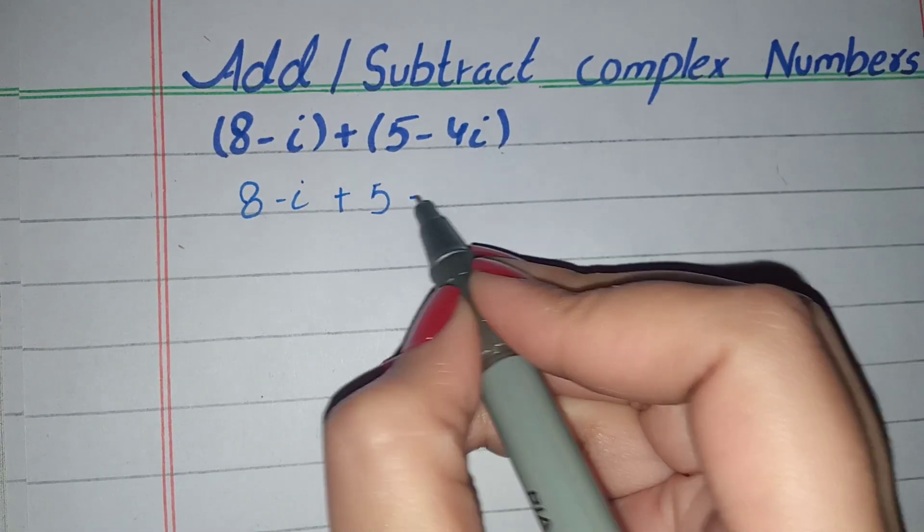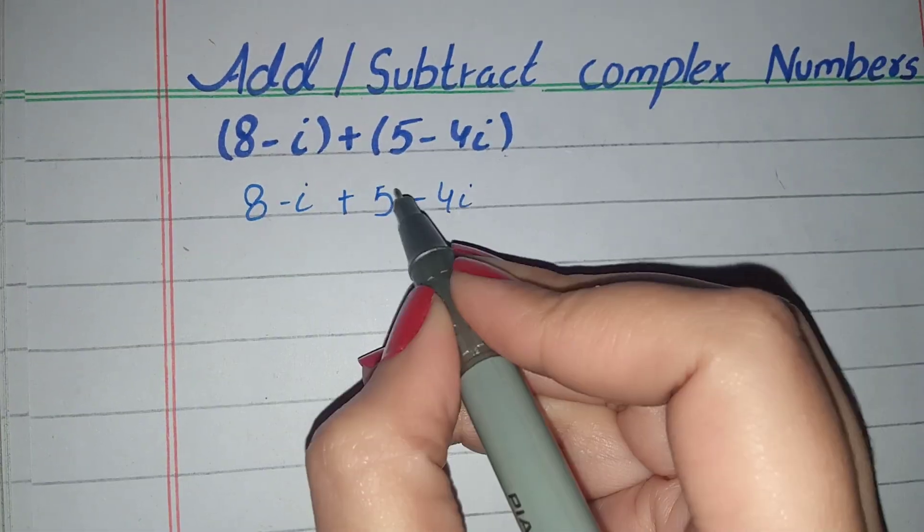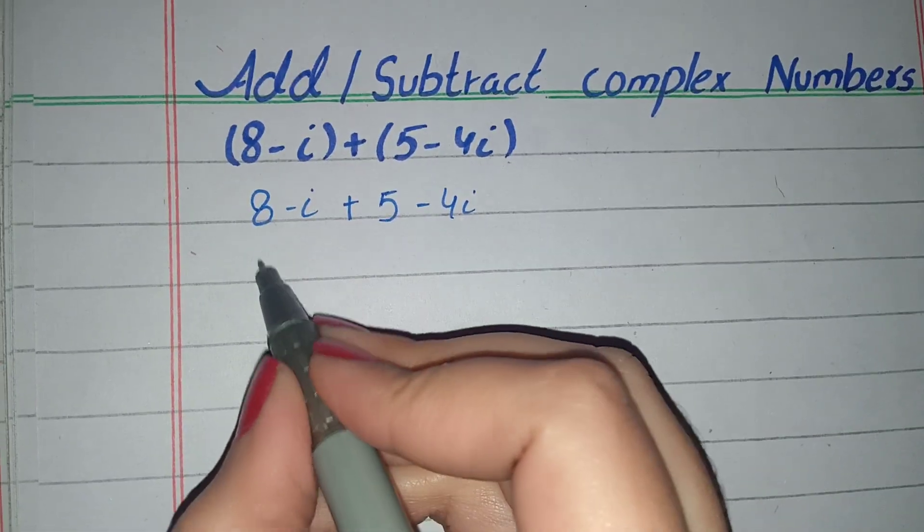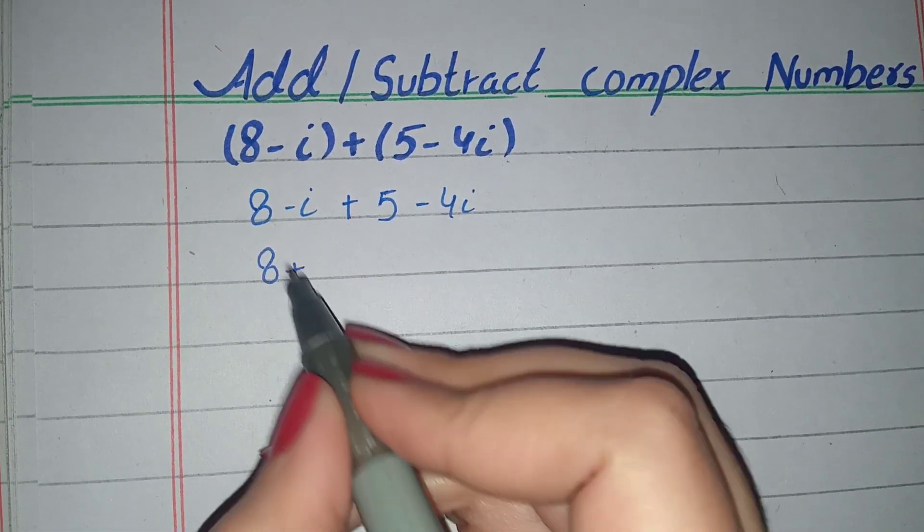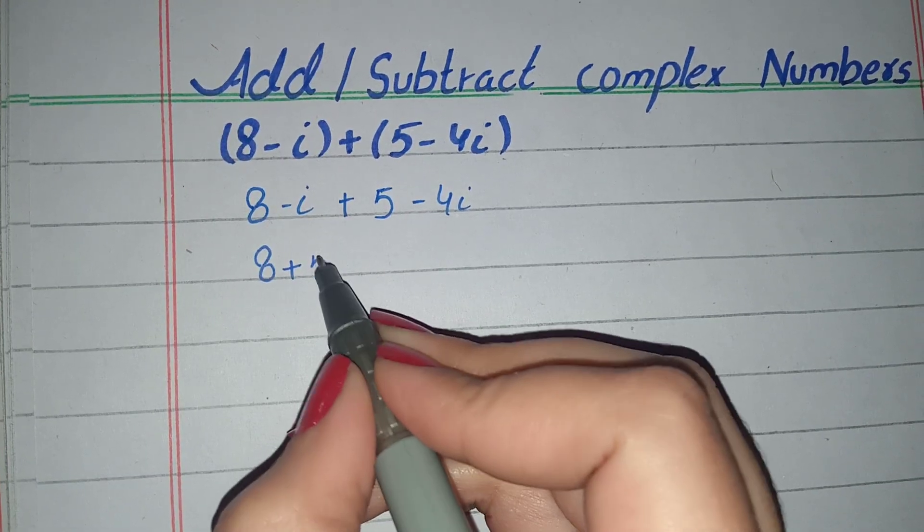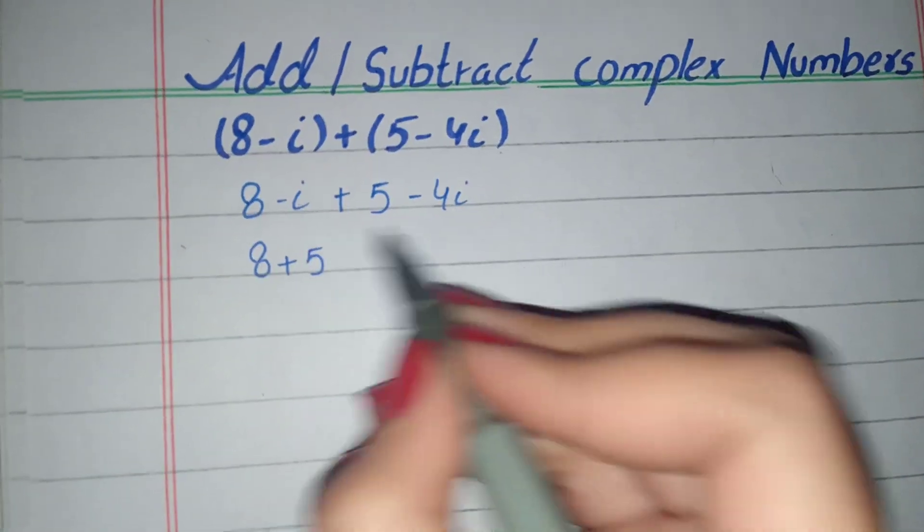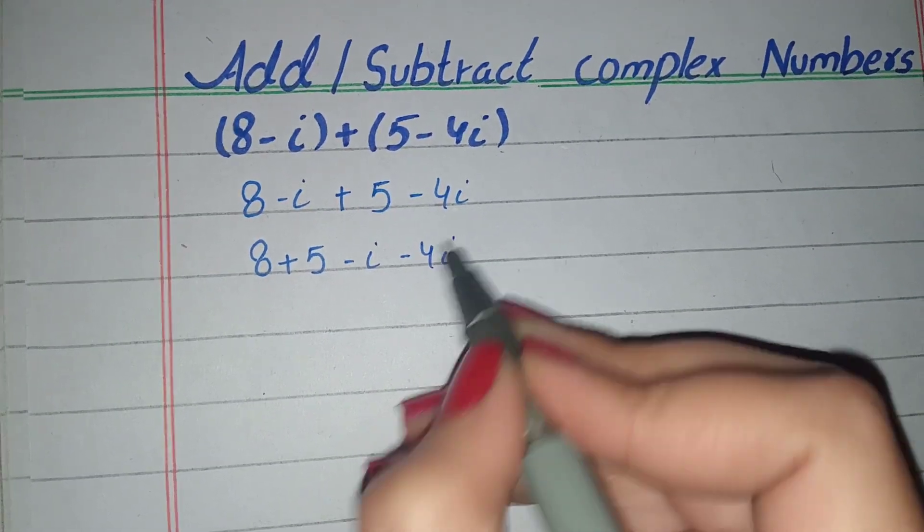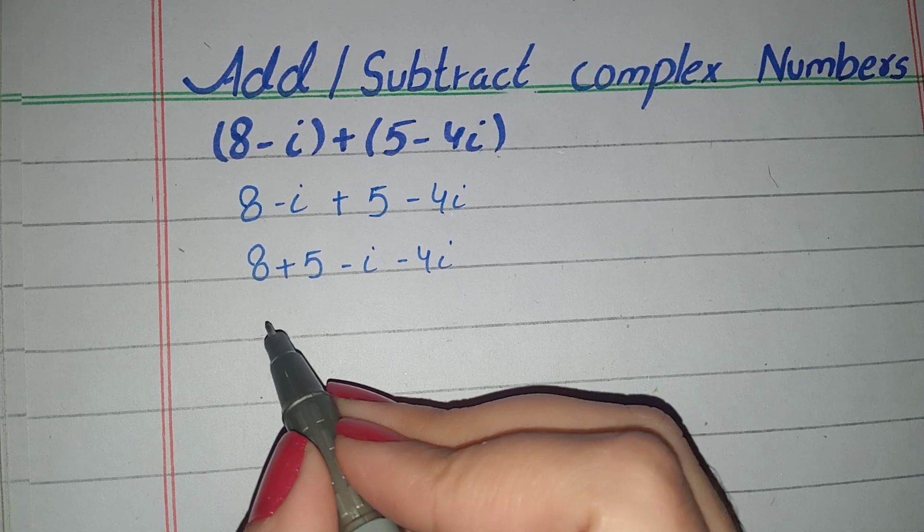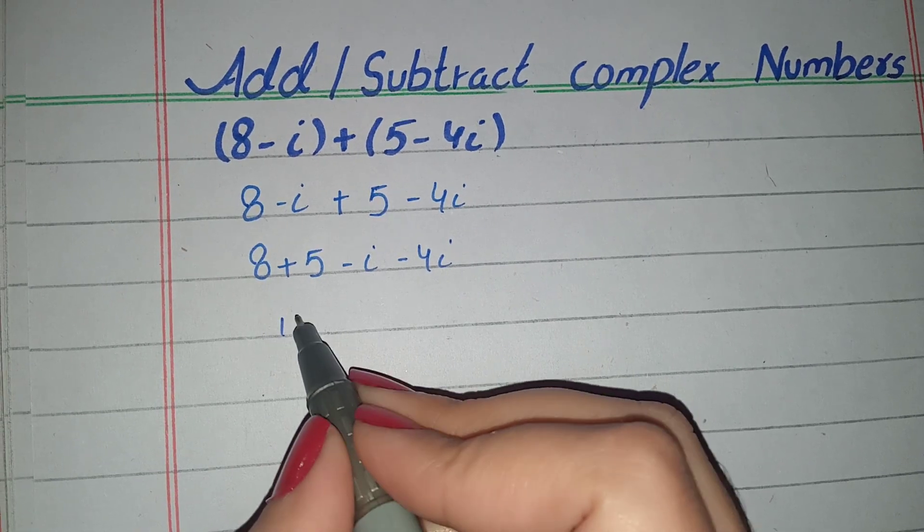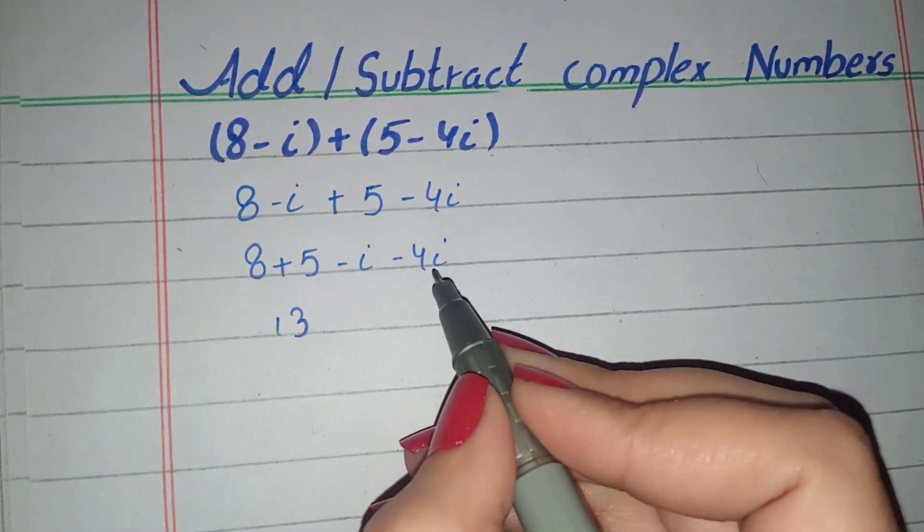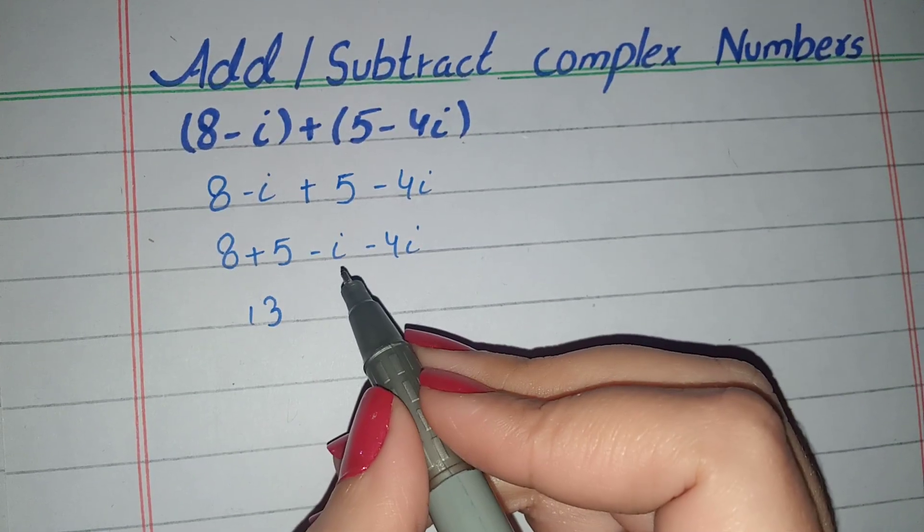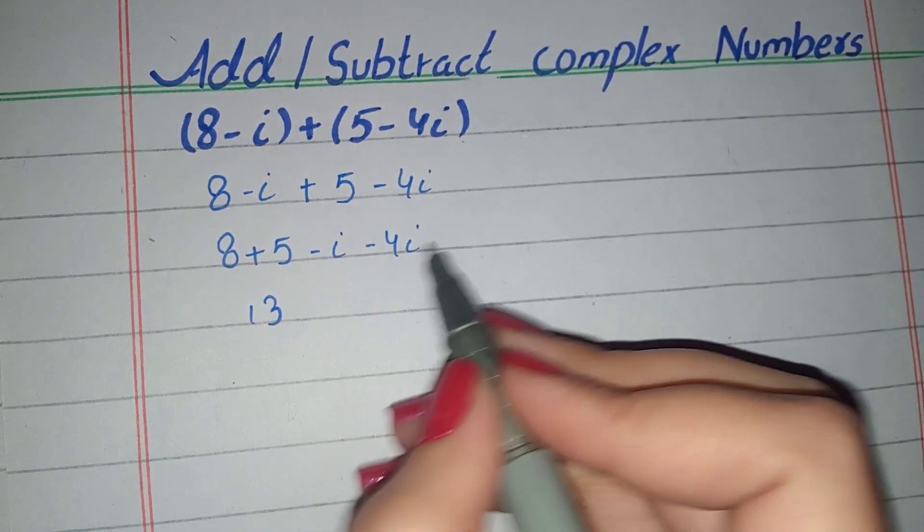We will arrange real numbers, then complex numbers: minus i, minus 4i. 8 plus 5 equals 13, and negative i, negative 4i - we will add them.